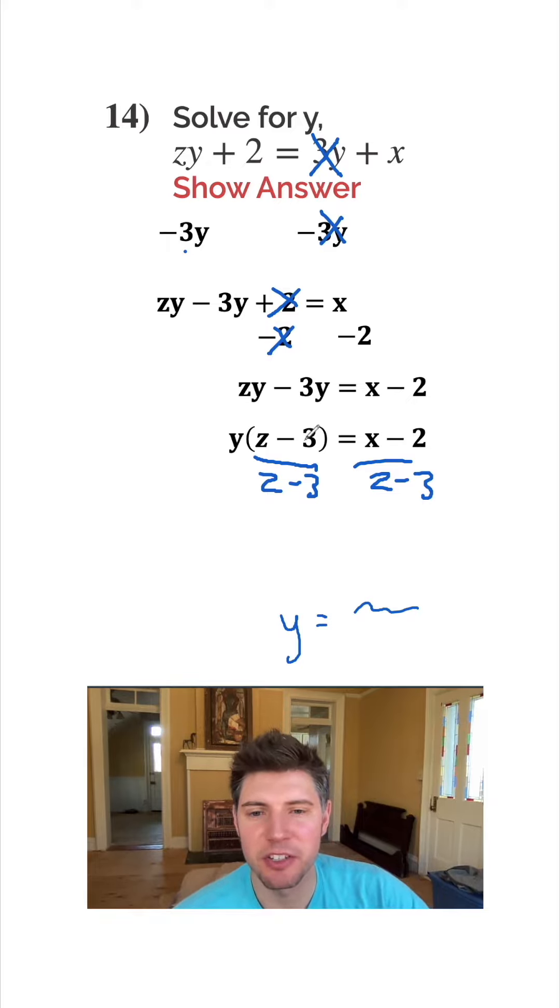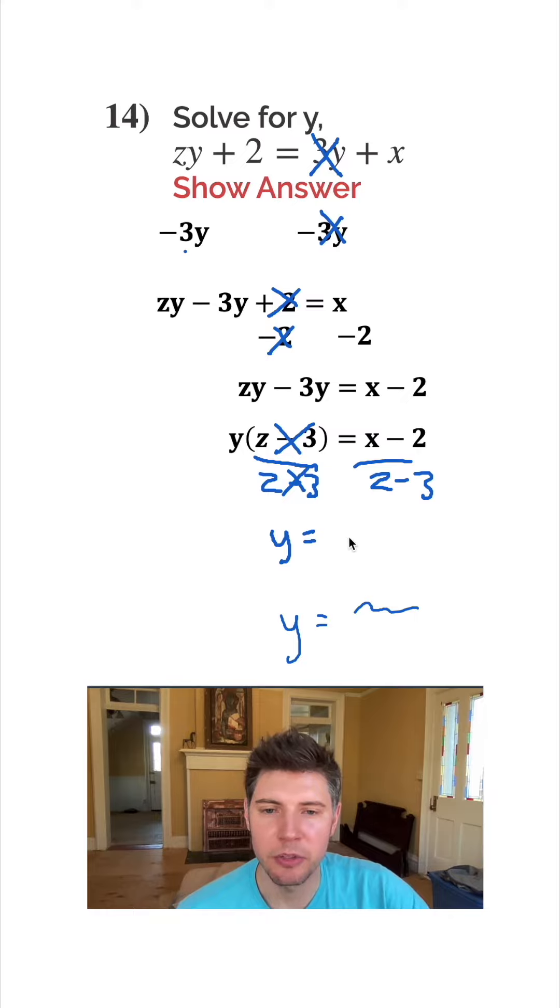So if we just divide both sides by z minus 3, these are going to cancel here and we end up with y equals x minus 2 over z minus 3. So that's what we were trying to do, was get y by itself.